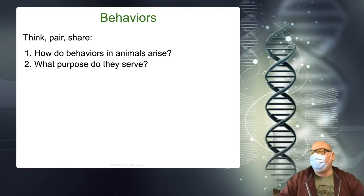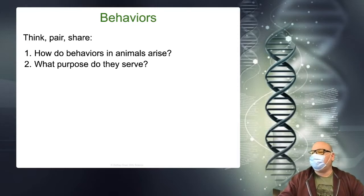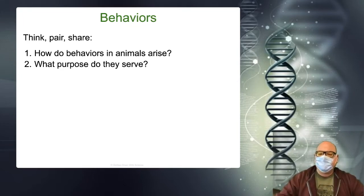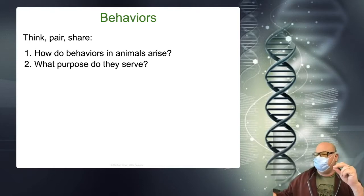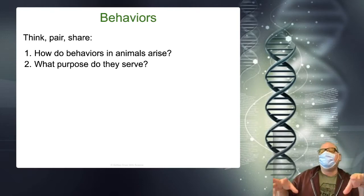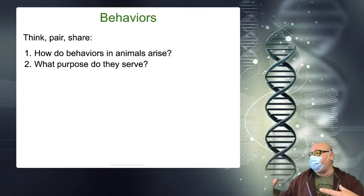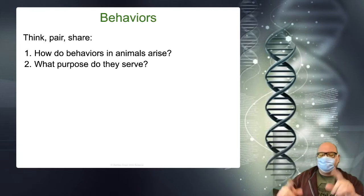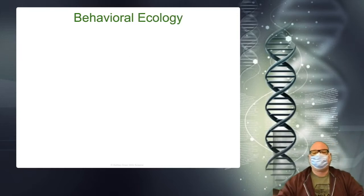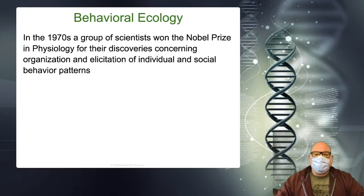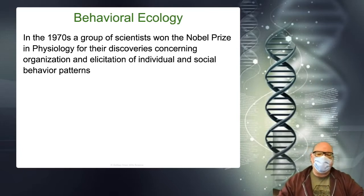What purpose does that alert behavior serve? Why would they do that? All life is trying to survive and reproduce. The whole point of life is to get your genes, your DNA into the next generation. We'll look at some animal behaviors where the animal might be willing to die for its behavior. We've been studying this for a long time — there were several Nobel prizes, one in the 70s for animal behavior — and we see all kinds of very interesting individual and social animal behaviors.